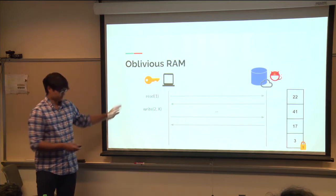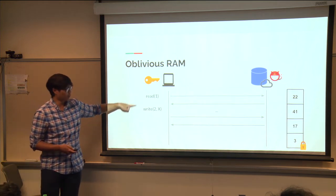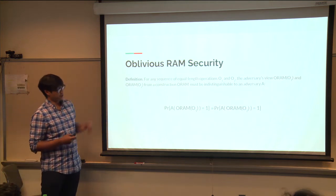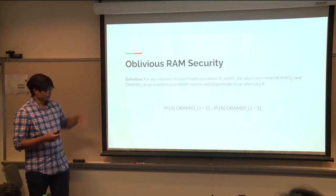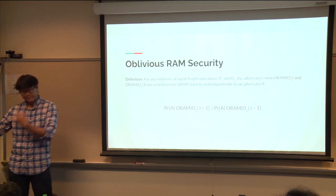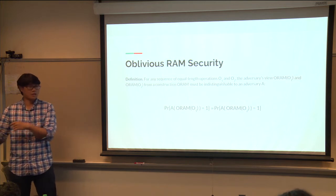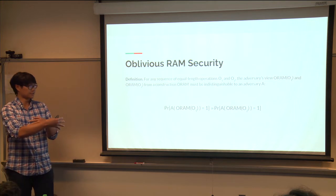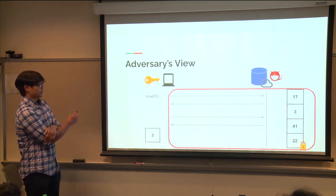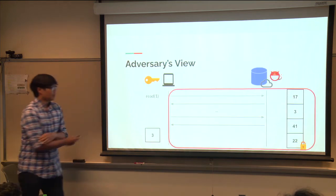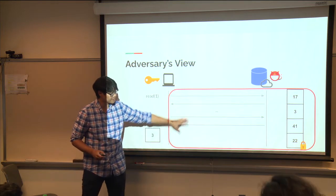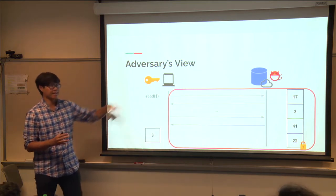This is oblivious RAM — it supports reads and writes. The security definition says: for any two sequences of operations of the same length, the adversary storing the encrypted data should not be able to distinguish between the two operational sequences, regardless of how they differ. The adversary's view includes all interactions, all data and encryption, and all memory states at any point in time, not just the current memory.